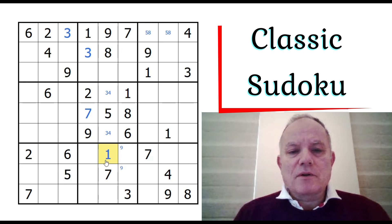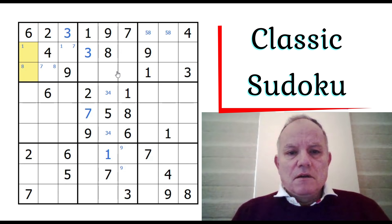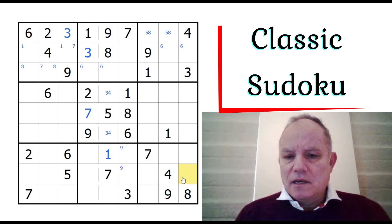Up here one of these is a one. One of these two is an eight. That six is restricting six here to one of those two. That one has helped with this one into this box down here - clearly the one must be in this cell. That gives us a one over there.